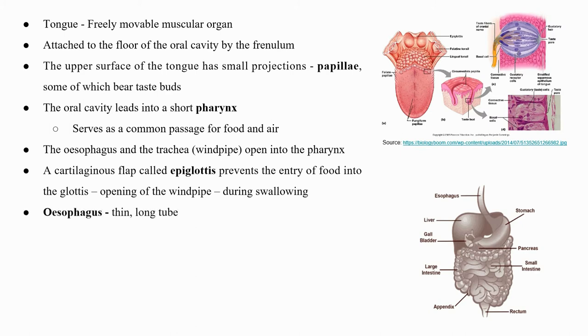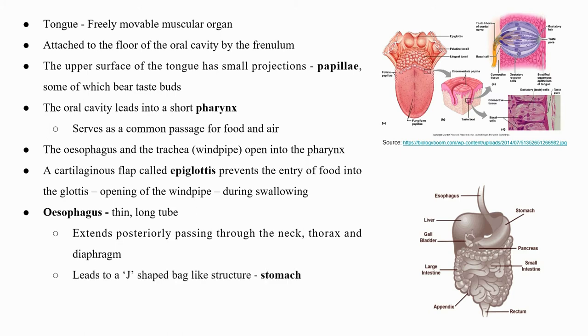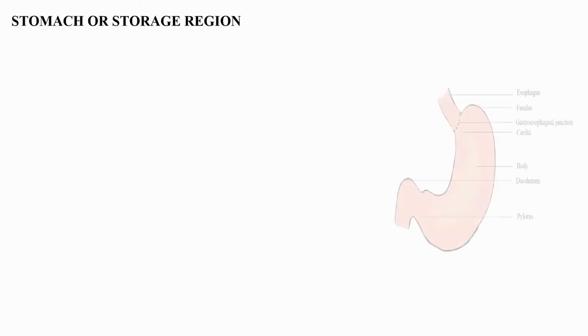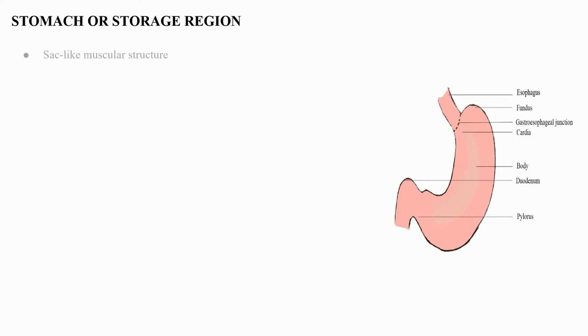A cartilaginous flap called the epiglottis prevents the entry of food into the glottis, which is the opening of the windpipe during swallowing. The esophagus is a thin long tube which extends posteriorly, passing through the neck, thorax, and diaphragm, and leads to a J-shaped bag-like structure called the stomach. A muscular sphincter — the gastroesophageal sphincter — regulates the opening of the esophagus into the stomach.